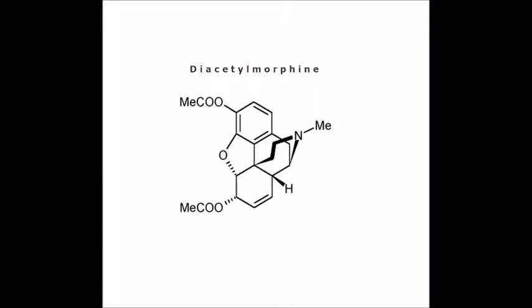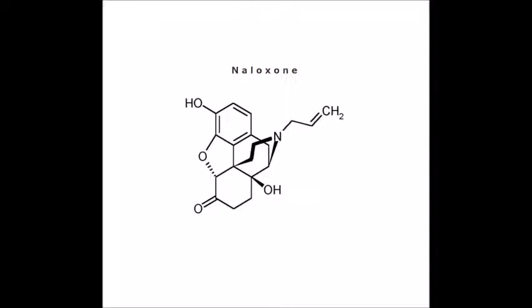And now to our bachelors. Diacetylmorphine, or as his friends call him, heroin, is a 21-carbon molecule with the formula C21H23NO5. He's fast-acting, smooth, and has an addictive personality. And his competitor, naloxone, often called by the brand name Narcan, is a 19-carbon molecule with the formula C19H21NO4. He likes being the hero and getting people back on their feet.